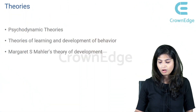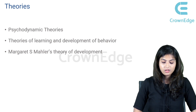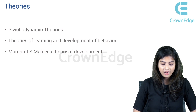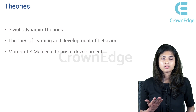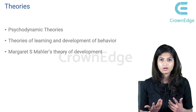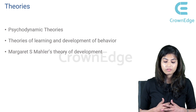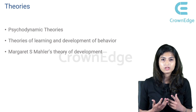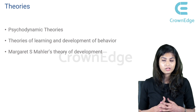To understand child psychology, there are several theories that have been put forward. The broad classification of these theories has been done into psychodynamic theories, theories of learning and the development of behavior, and Margaret Mahler's theory of development. Psychodynamic theories try to understand the dynamics of psychology. Theories of learning and development of behavior explain how an individual learns or how behavior is developed.